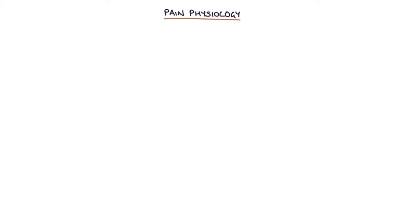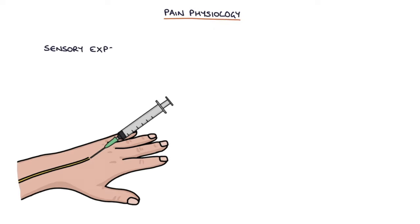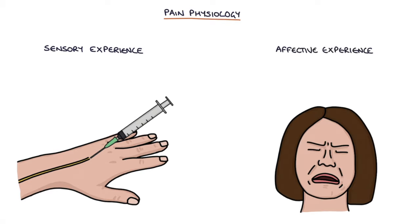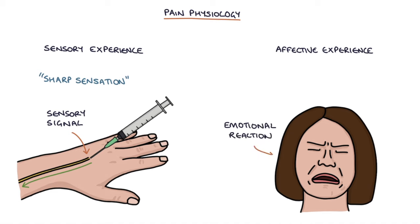Let's talk about some basic pain physiology. There are two aspects to the experience of pain: the sensory experience and the affective experience. The sensory experience refers to the sensory signal transmitted from the pain receptor — for example, when a patient says it's a sharp sensation like a needle. The affective experience is the unpleasant emotional reaction to the pain — for example, when a patient says it's excruciating and they can't bear it.